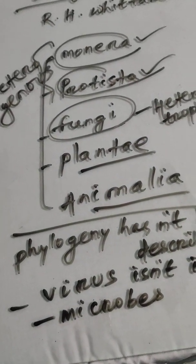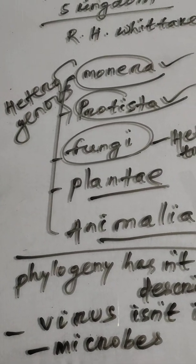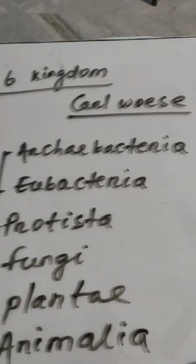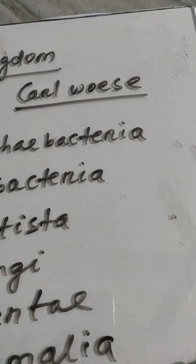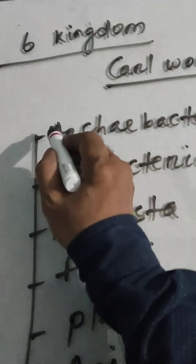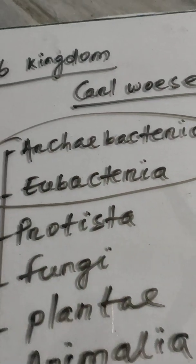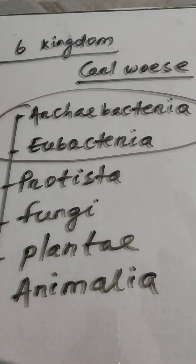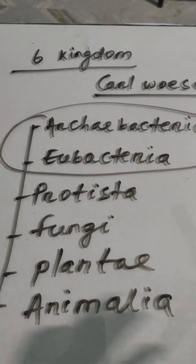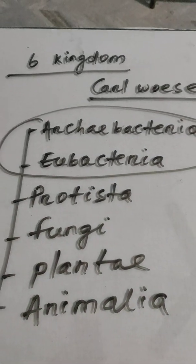The five-kingdom system was replaced by the six-kingdom system given by Karl Woese. He divided Monera into two groups: Archaebacteria and Eubacteria. Hence, it became a six-kingdom system, with all the rest four kingdoms remaining similar as before.